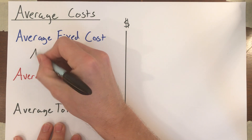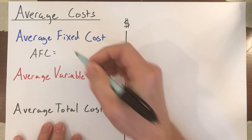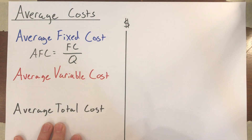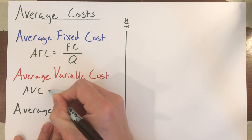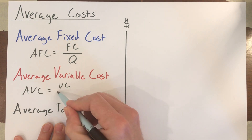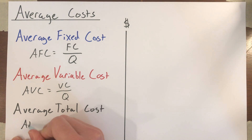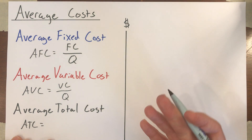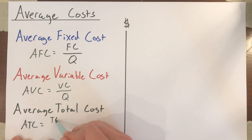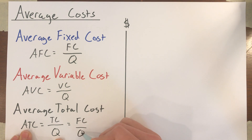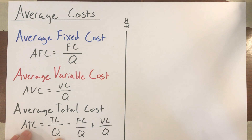The average fixed cost, or AFC, is just equal to the firm's fixed costs divided by the quantity of units that it's producing. Average variable cost, or AVC, is equal to the firm's variable cost of production divided by output. Average total cost, or ATC, you can write that two different ways: it's equal to the firm's total costs divided by its level of output, or equivalently, average total cost equals average fixed cost plus average variable cost divided by quantity.